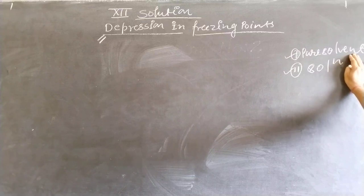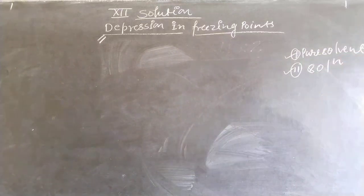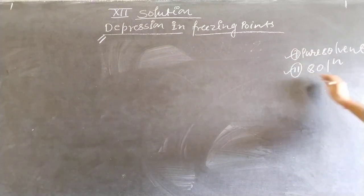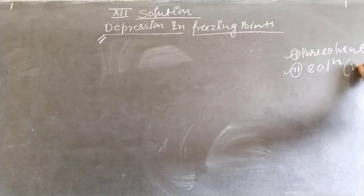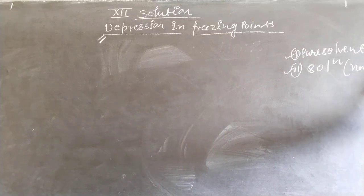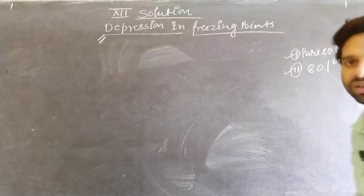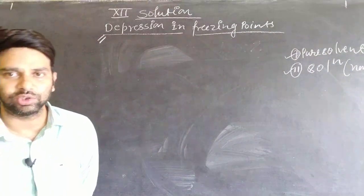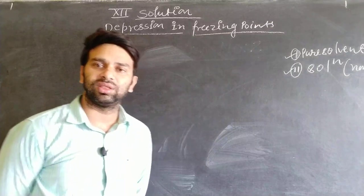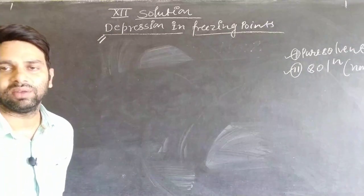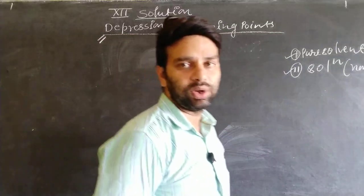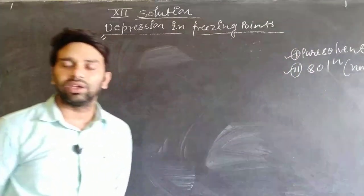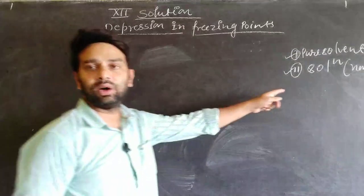In previous lectures we learned that the vapor pressure of pure solvent is always higher compared to the solution, because when non-volatile components are present in the solution, they do not vaporize quickly. Due to this mixing, elevation of boiling point and relative lowering of vapor pressure are observed, and according to Raoult's Law,